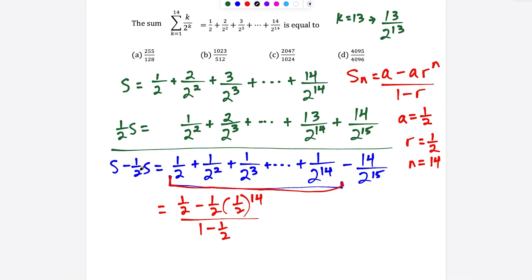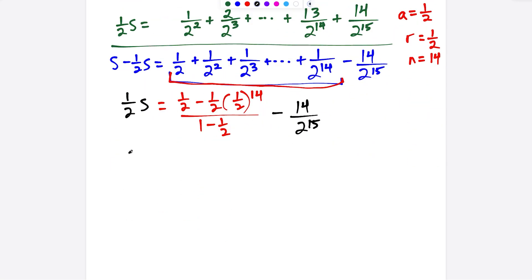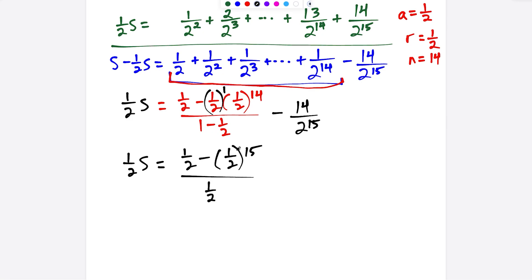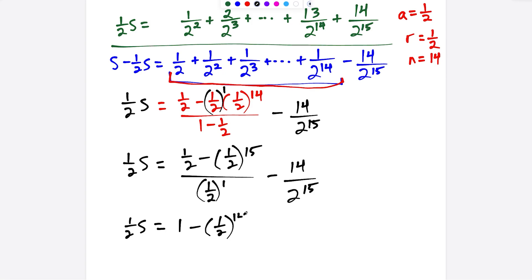Carrying down the rest: S minus (1/2)S is (1/2)S, and at the end we have minus 14 over 2 to the 15th. So (1/2)S equals — for the geometric part, 1/2 minus (1/2) to the 15th, all divided by 1/2. Splitting this: 1/2 divided by 1/2 is 1, and (1/2) to the 15th divided by (1/2) to the first, subtracting exponents gives (1/2) to the 14th. So we have (1/2)S equals 1 minus (1/2) to the 14th minus 14 over 2 to the 15th.